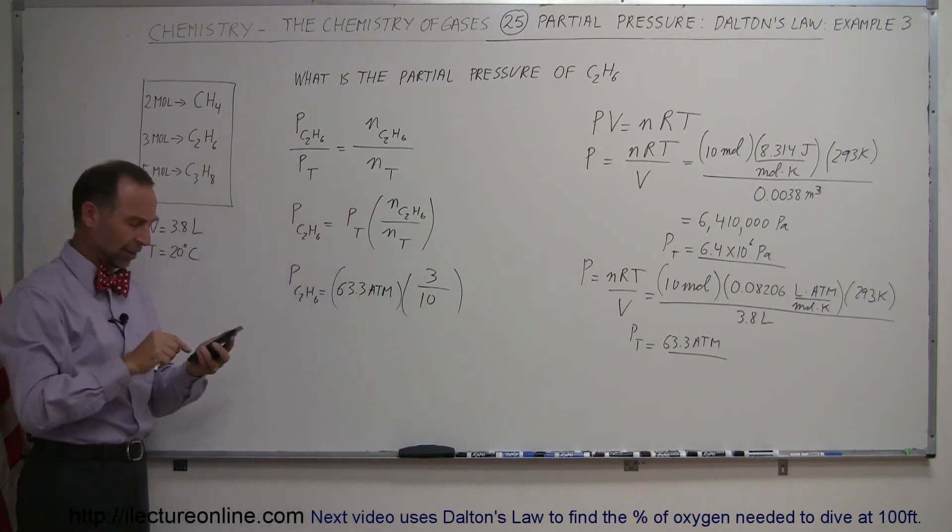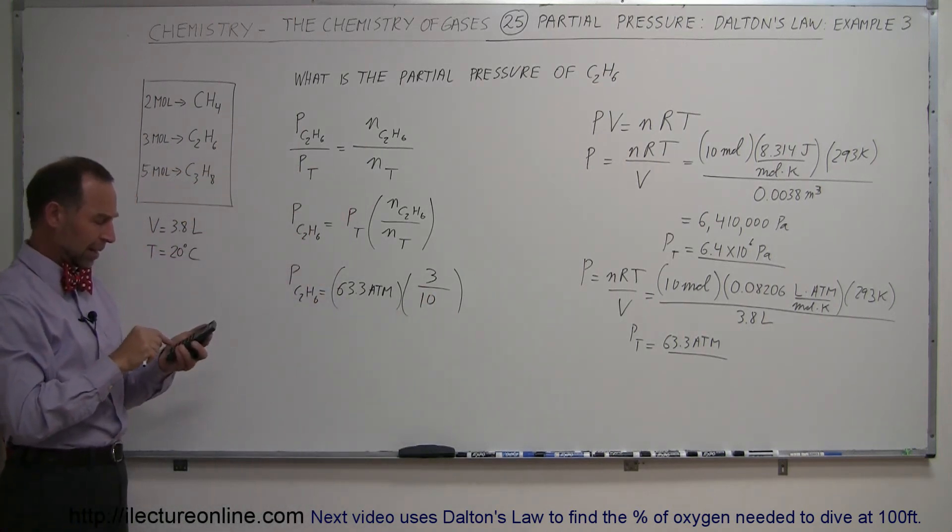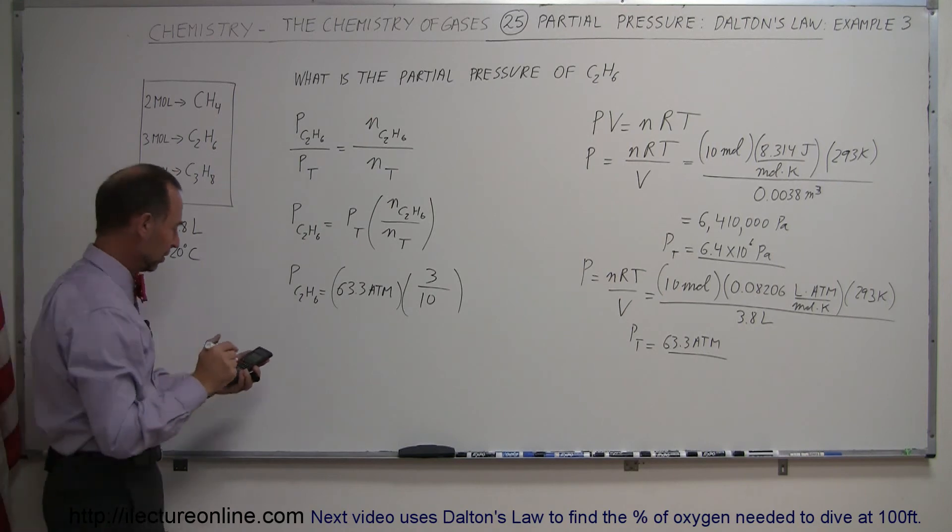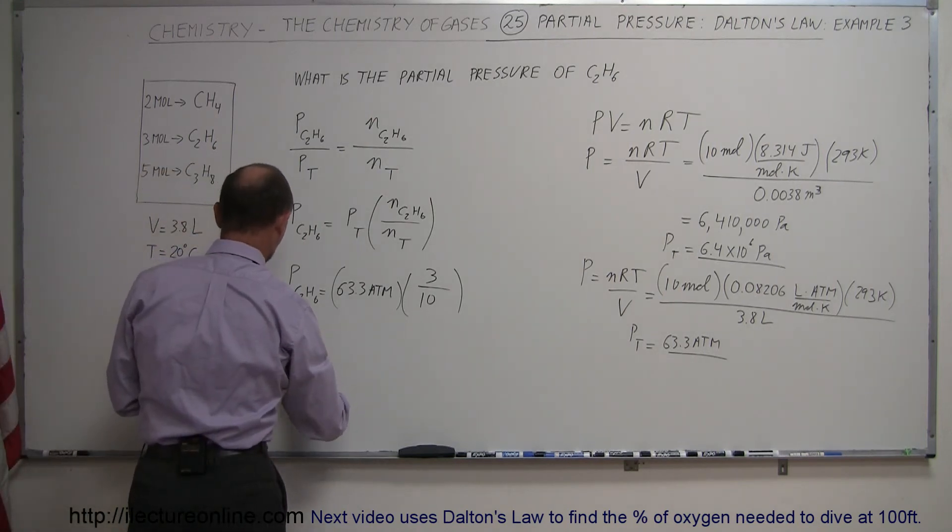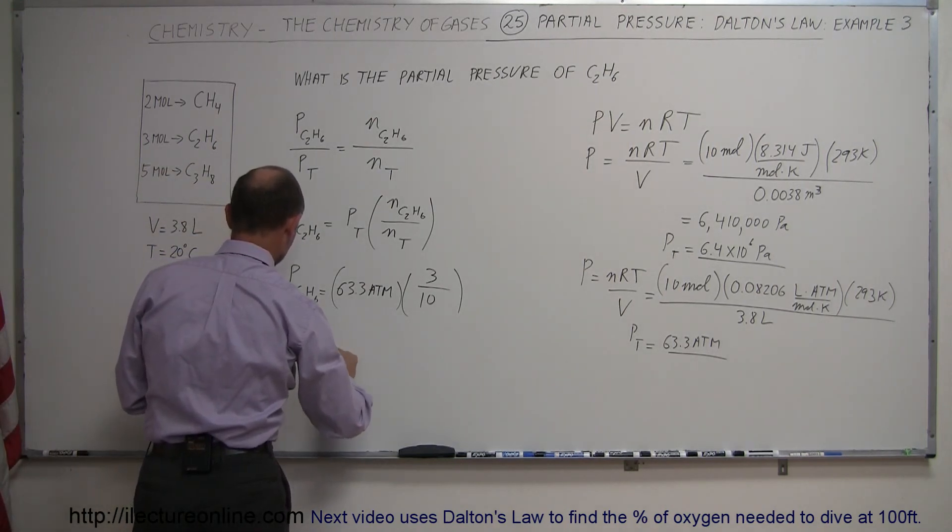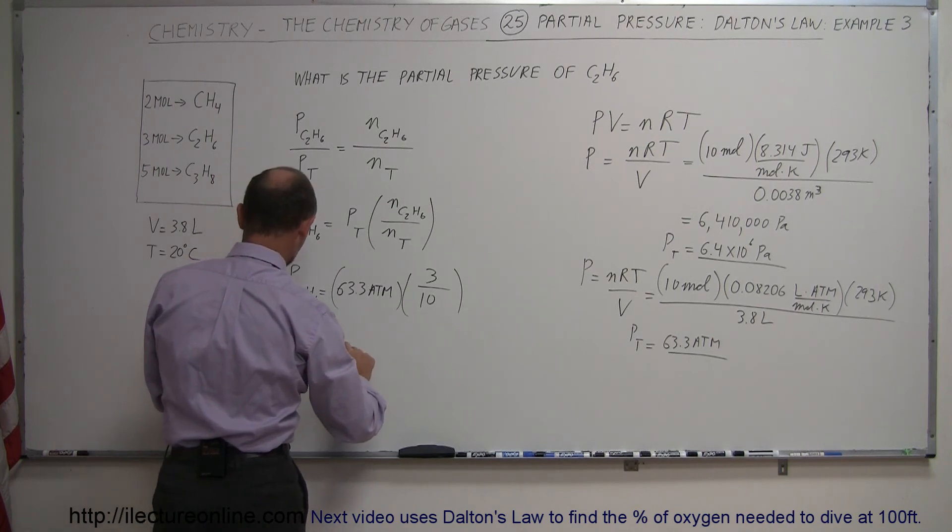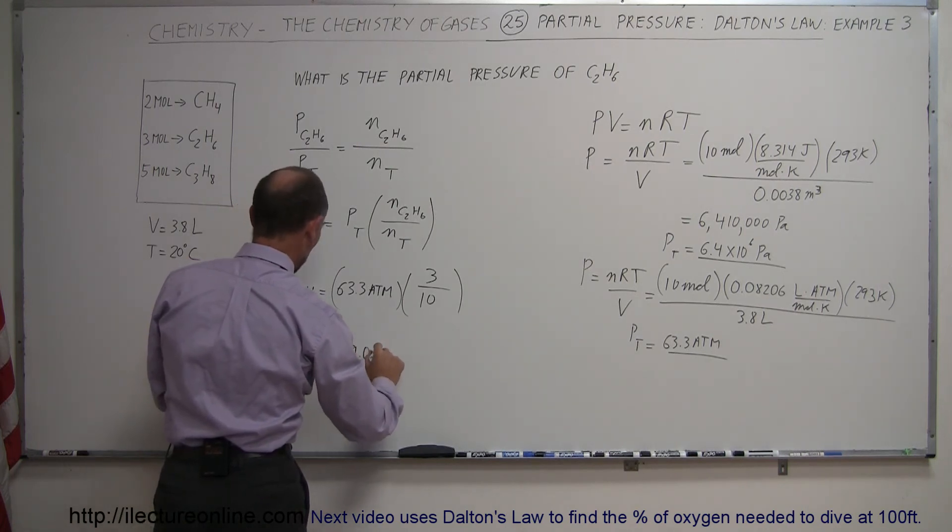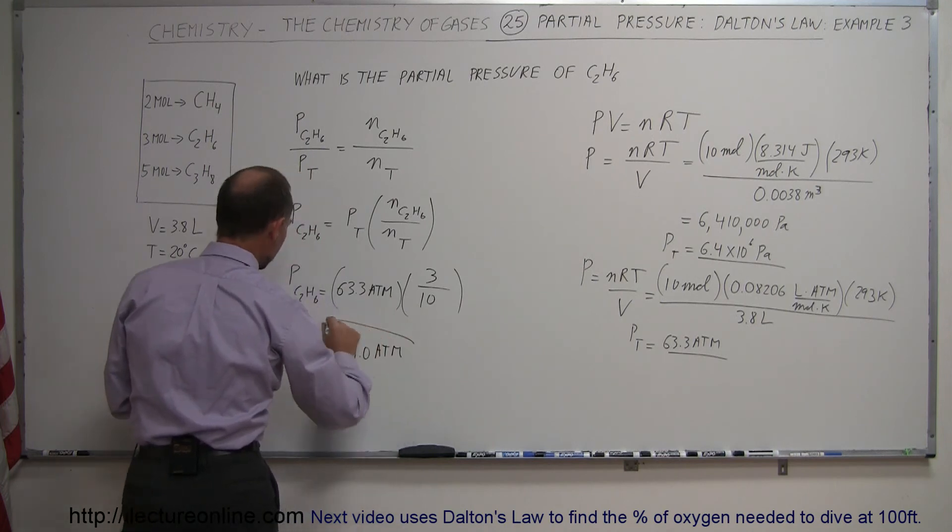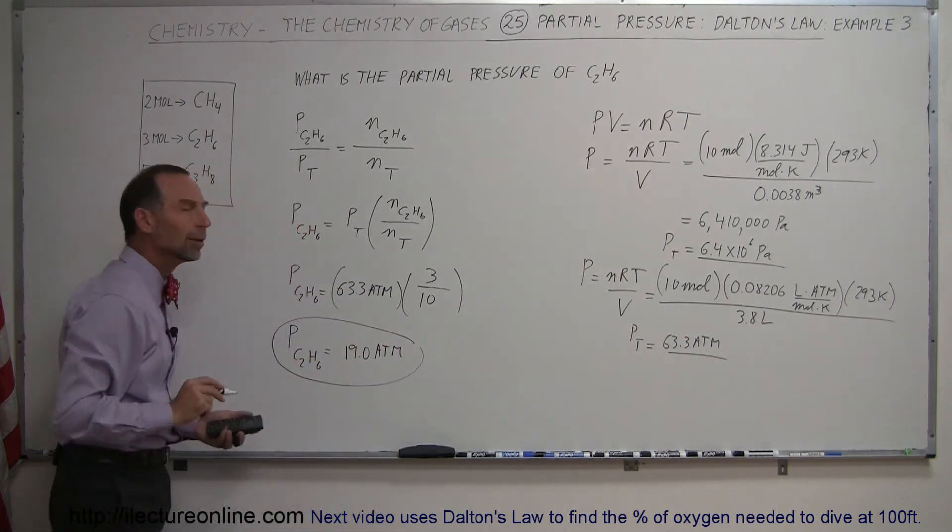So it would be 3 tenths of that. Times 0.3 equals, and the partial pressure of ethane in the total mixture is about 19.0 atmospheres. And that's how we do that.